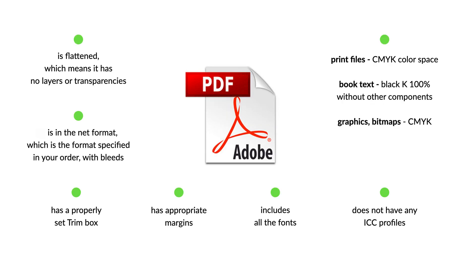A properly prepared PDF file for printing is flattened, which means it has no layers or transparencies. It is in the net format specified in your order, with bleeds, has a properly set trim box, has appropriate margins, includes all the fonts, does not have any ICC profiles. We prefer print files created in the CMYK color space. This especially applies to any text in your project, and the inside in particular.